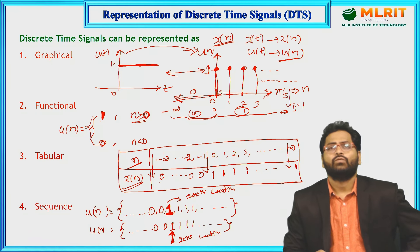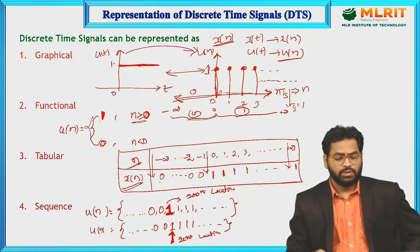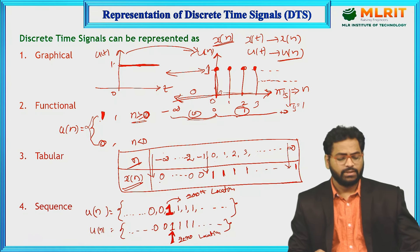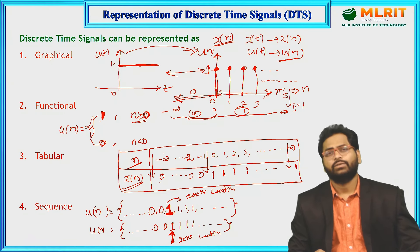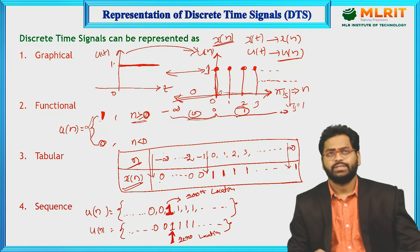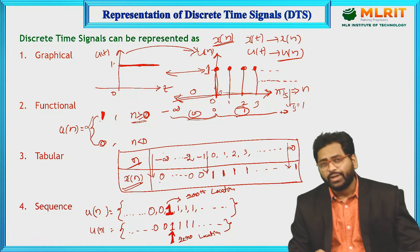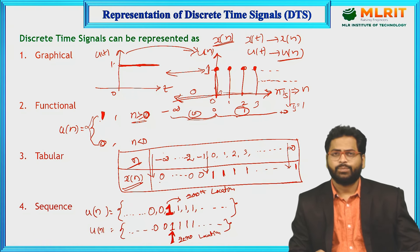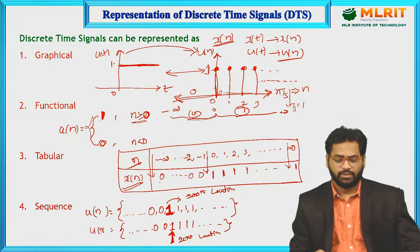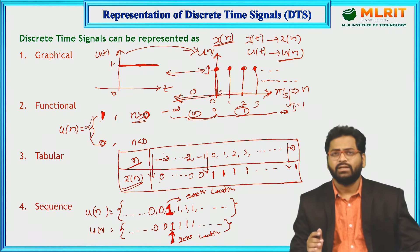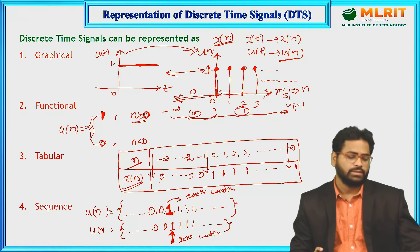These are the four representations of discrete time signals: graphical (pictorial representation), functional (mathematical representation), tabular (table format), and sequence (signal represented in the form of sets).